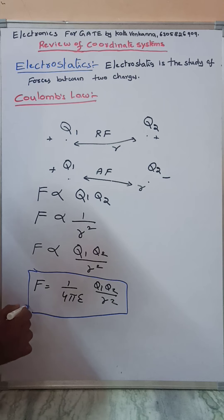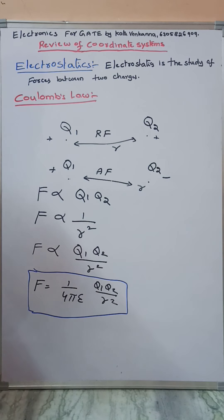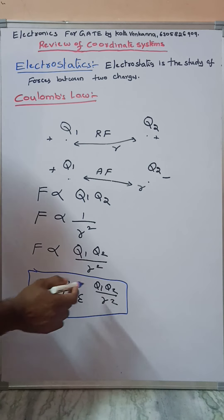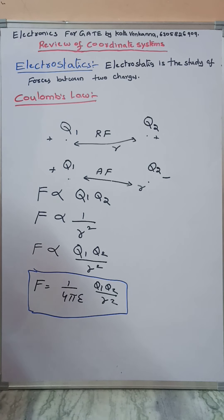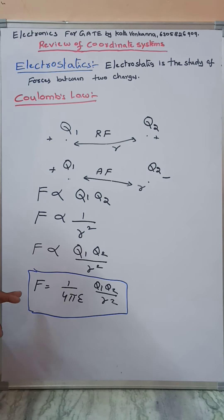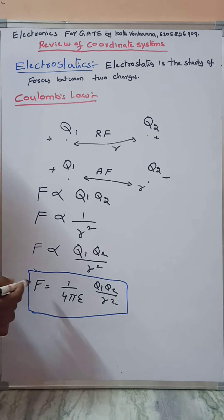Coulomb's law: F equals 1 over 4 pi epsilon times Q1 Q2 divided by R squared. Here Q1 and Q2 are the charges, R is the distance between the two charges, and epsilon is the permittivity of the medium. This is known as Coulomb's law.